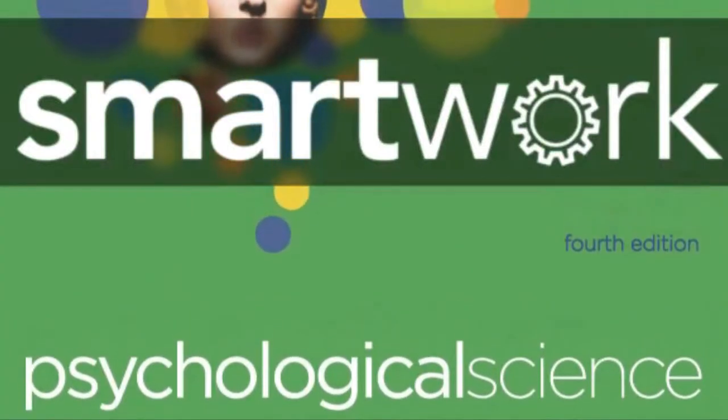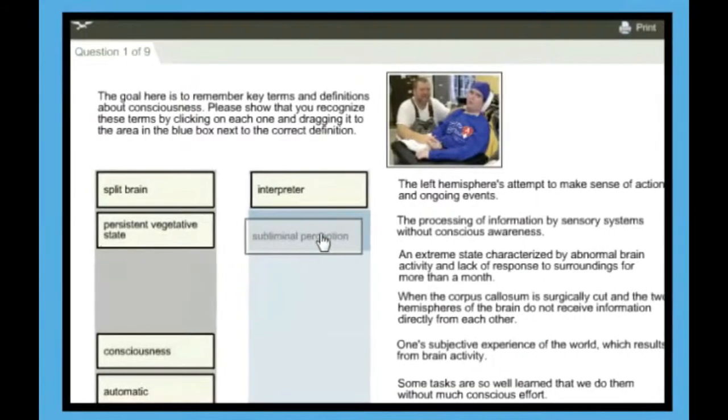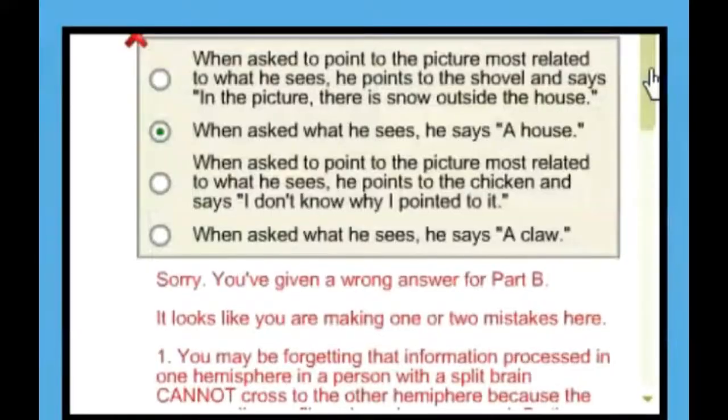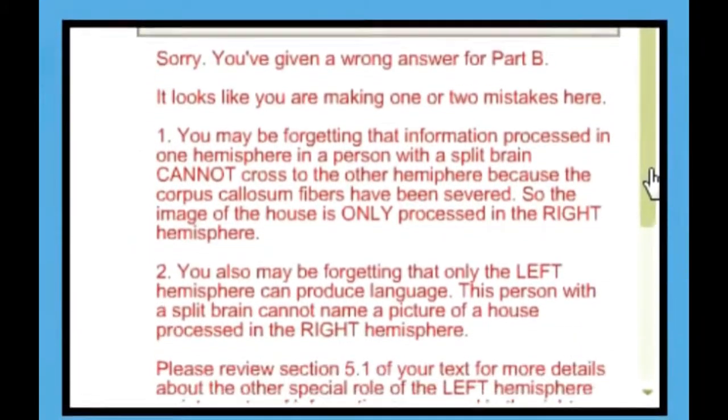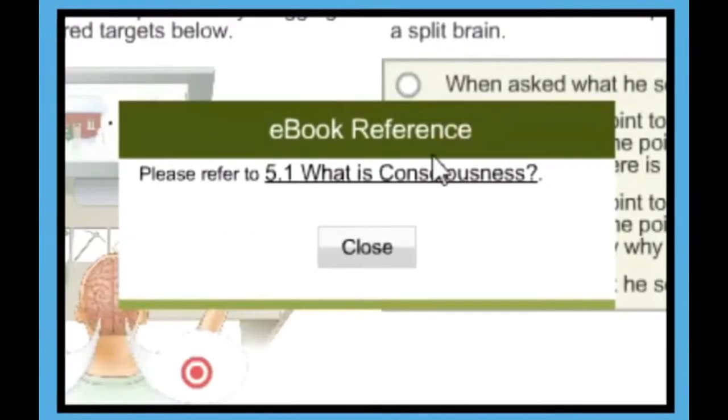SmartWork for Psychological Science gives students access to a bank of engaging class-tested questions with smart feedback that will guide them to the right answer or back to a specific page in the book, giving them the help they need when they need it.